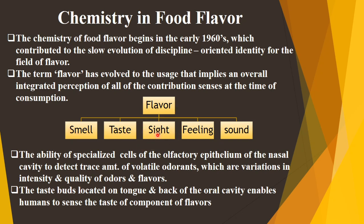We recognize flavor by smelling through the nose, taste by the tongue, sight by the eyes, feeling by touching — whether something is hard or soft — and sound, such as the cracking sound when eating hard food. These are the integrated perceptions that contribute to the senses at the time of consumption of food. This knowledge of flavor chemistry is commonly described as a relatively recent development in food chemistry, evolved from the use of gas chromatography and fast-scan mass spectrometry.